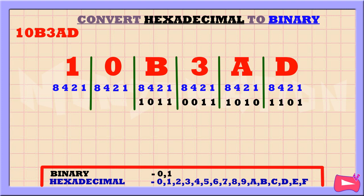B is the sum of 8, 2, and 1, so we're going to replace 8, 2, and 1 with 1. We didn't use 4, so let's replace it with a 0.